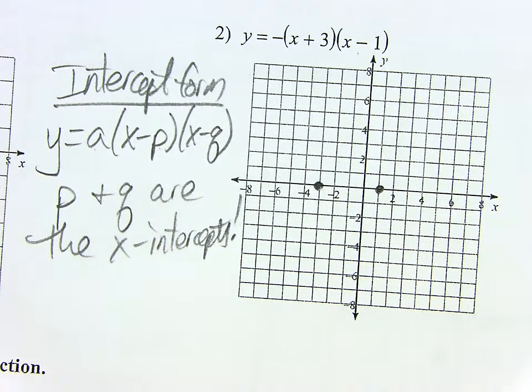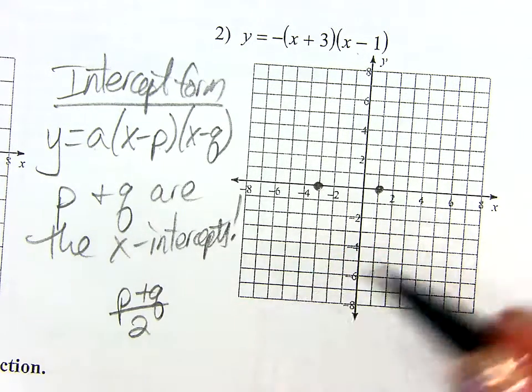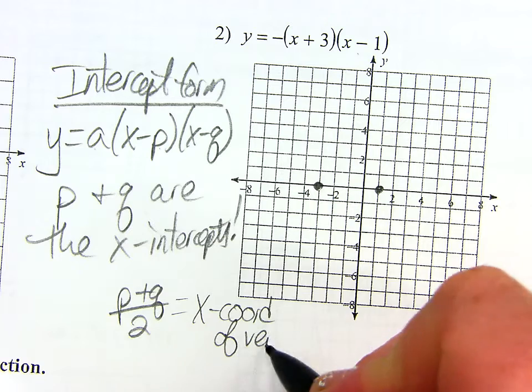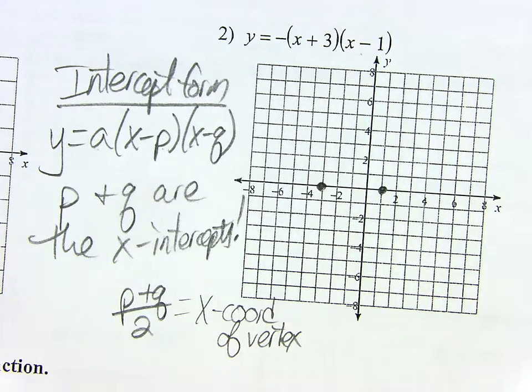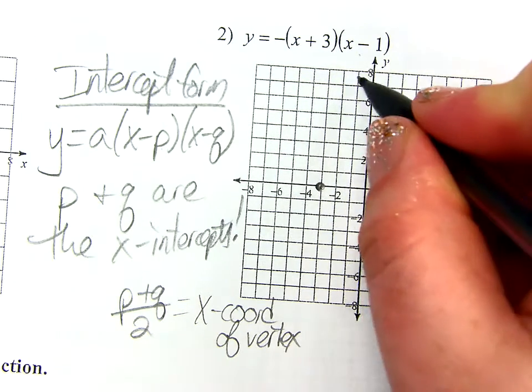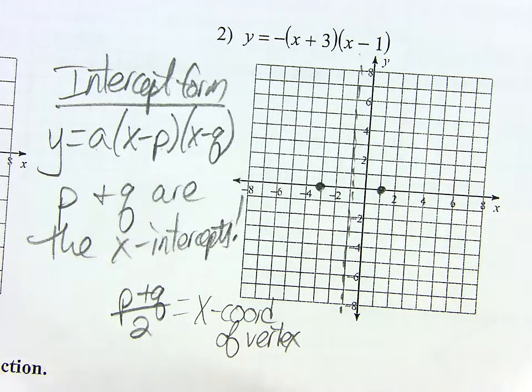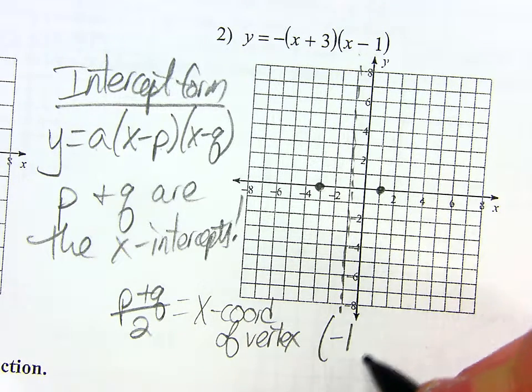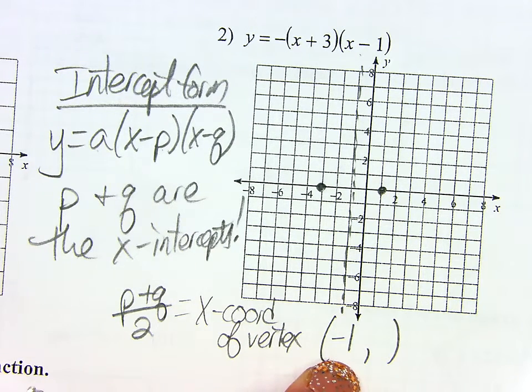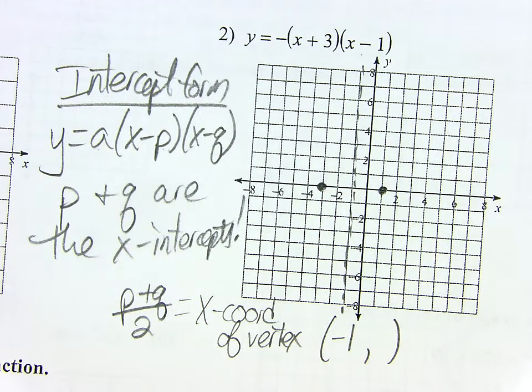So I already have two of the five points that I need. I do still need to find the vertex. Now I'm not going to do negative B over 2A, because if you look, I don't even have a B in this. I can be smart about it. I may not know exactly where the vertex is, but doesn't it have to be exactly halfway between these two points? I can find the X value if I just go halfway in between negative three and positive one.